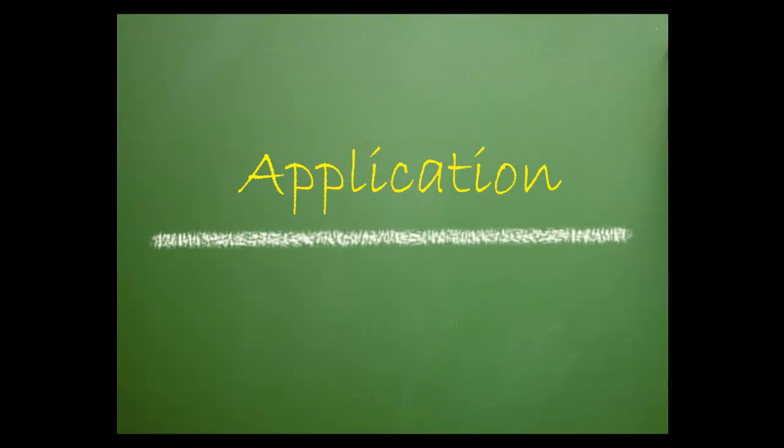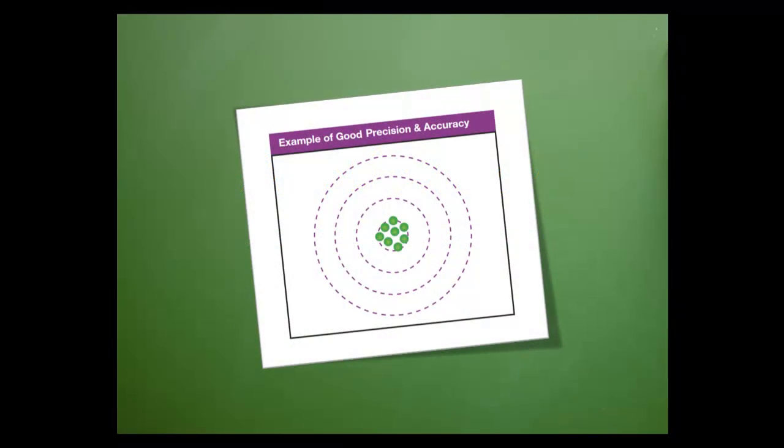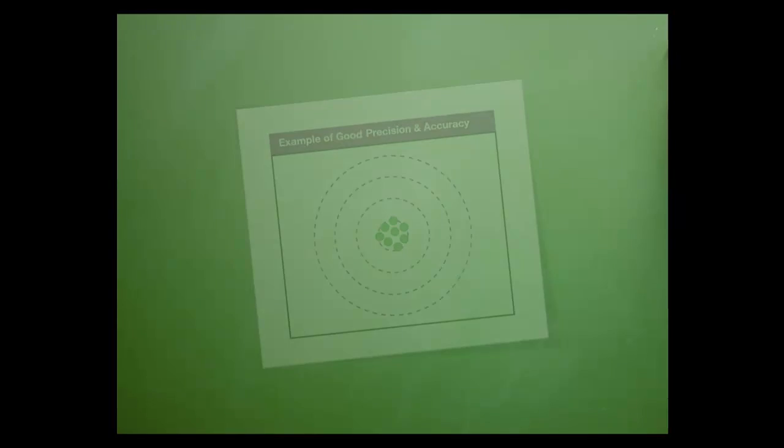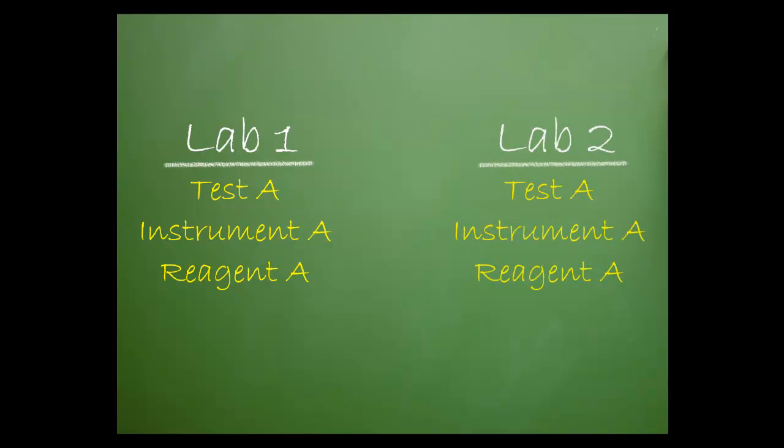Now that you know how to calculate a CVR, let's talk about application. How is CVR helpful? Well, accuracy and precision are equally important in a clinical laboratory. One way that a lab can determine whether the precision of a test is acceptable is to compare it to another lab performing the exact same test on the same instrument using the same reagents, basically a peer group.